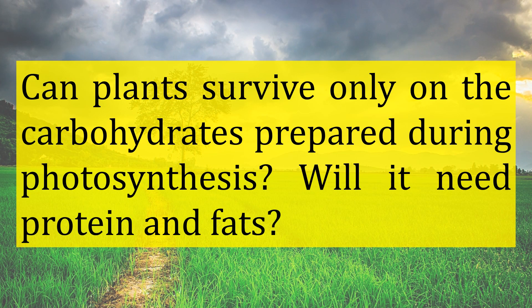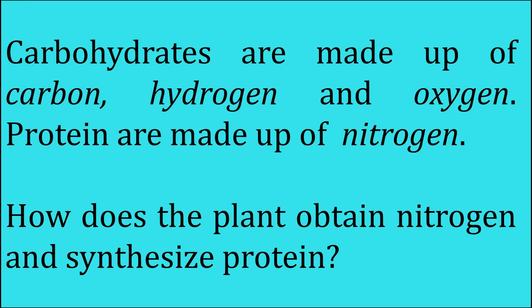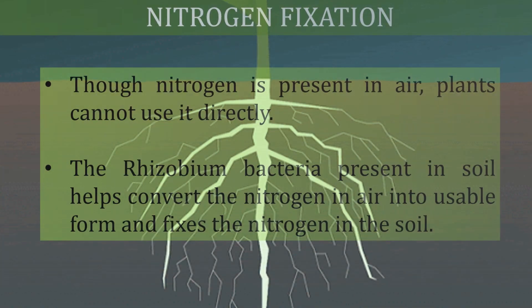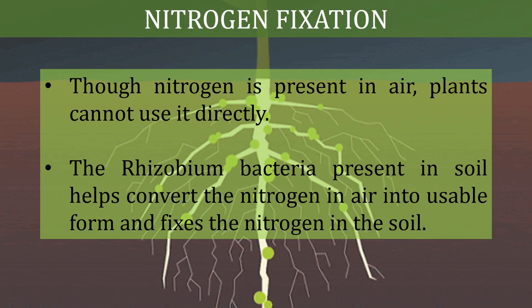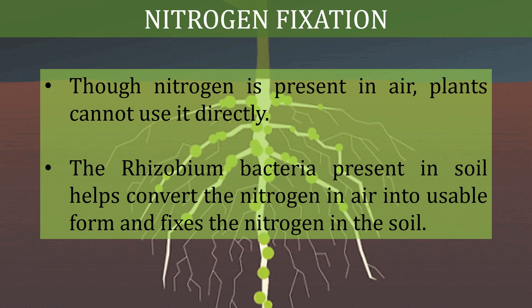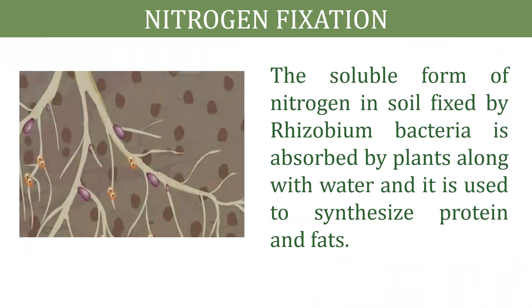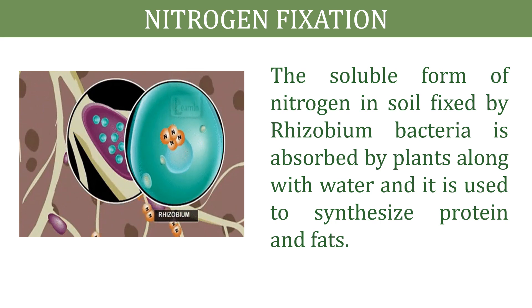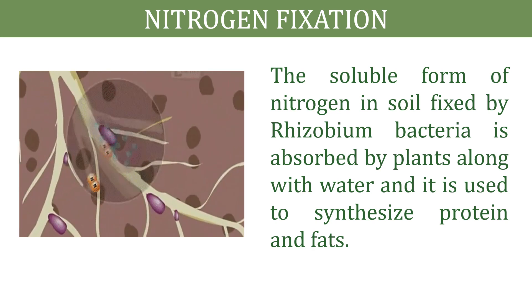Can plants survive only on the carbohydrates prepared during photosynthesis? Will they need proteins and fats? Carbohydrates are made up of carbon, hydrogen, and oxygen, while proteins are made up of nitrogen. Though nitrogen is present in air, plants cannot use it directly. The rhizobium bacteria present in soil helps convert the nitrogen in air into a usable form and fixes the nitrogen in the soil. This soluble form of nitrogen, fixed by rhizobium bacteria, is absorbed by plants along with water and is used to synthesize proteins and fats.